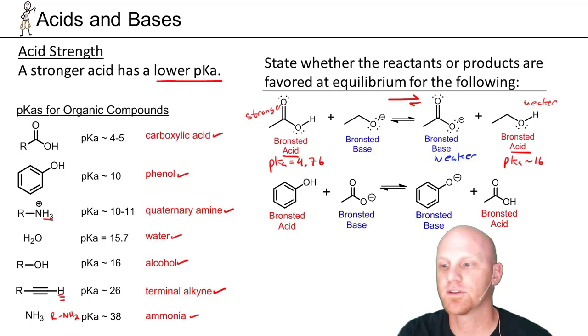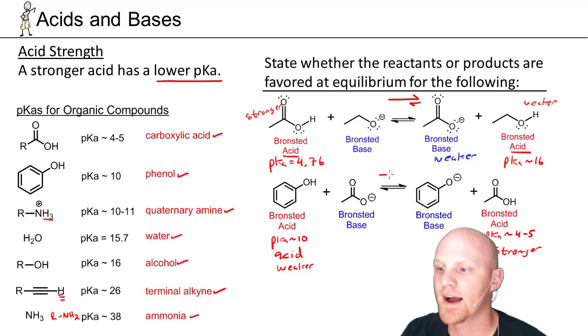If we look at the next example as well. Here we've got a phenol. And pKa is approximately 10. And then again, a carboxylic acid, pKa is approximately somewhere between 4 and 5. And we see that the lower pKa is the stronger acid. And the higher pKa is the weaker acid. So in this case, the equilibrium, therefore, is going to lie back towards the reactants. So in this case, the reactants will be favored at equilibrium rather than the products.